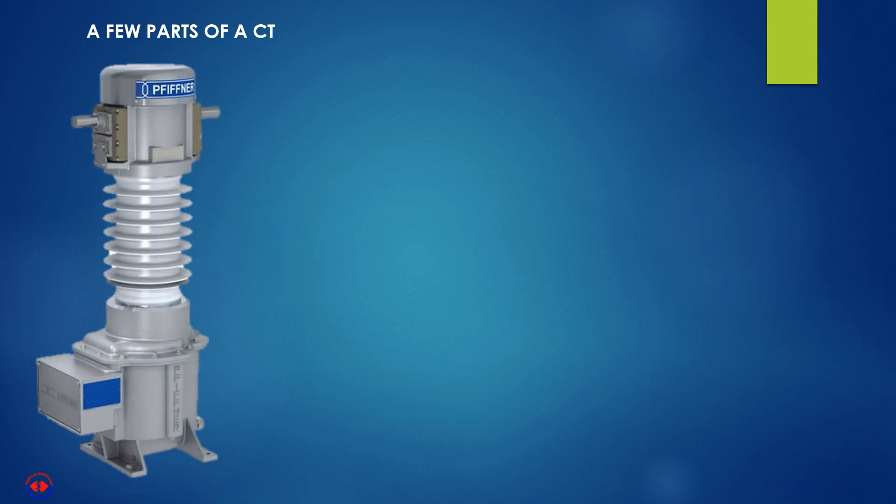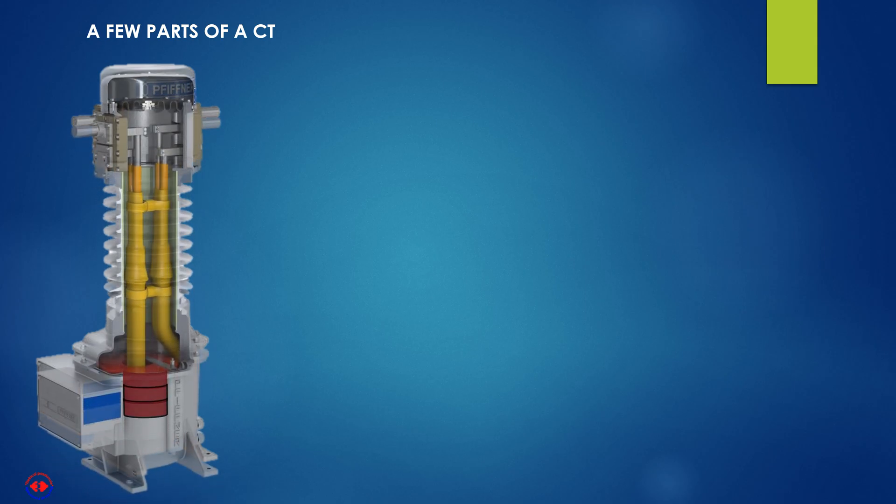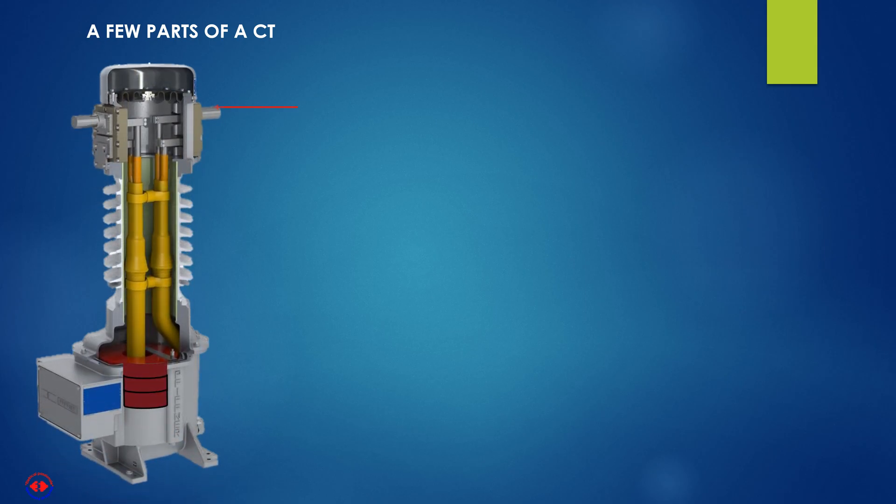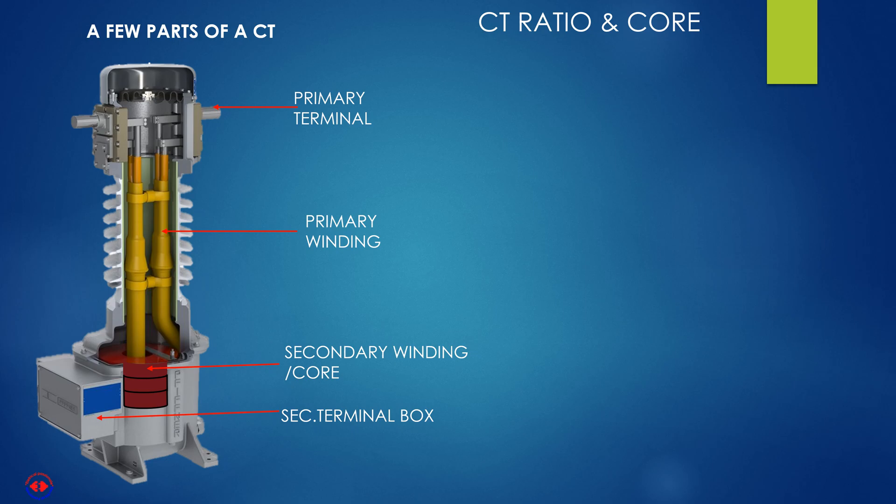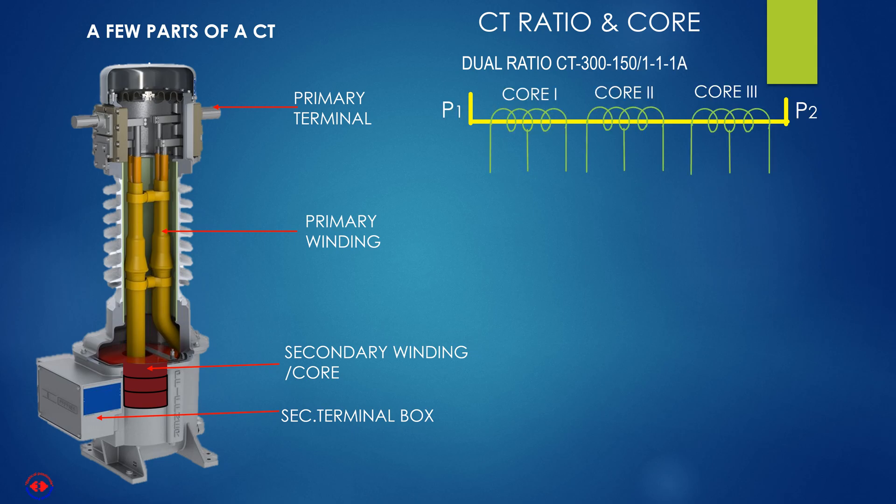This is an image of a high-voltage outdoor current transformer and its various parts. This is a three-core dual ratio current transformer of ratio 300 ampere, 150 ampere oblique, 1-1 ampere. P1 and P2 are its primary terminals.